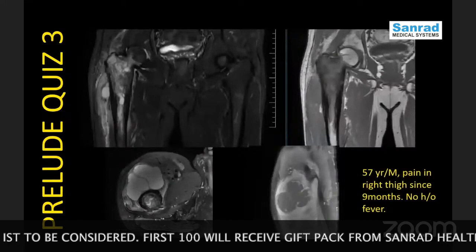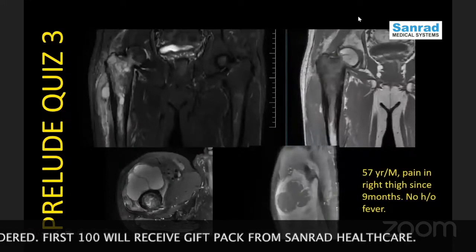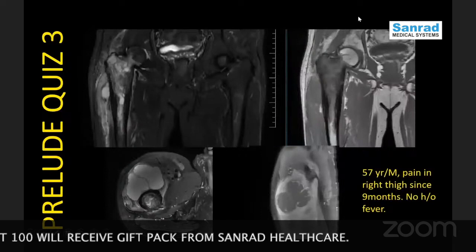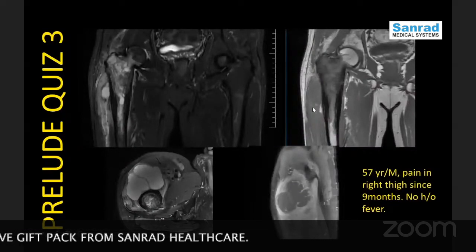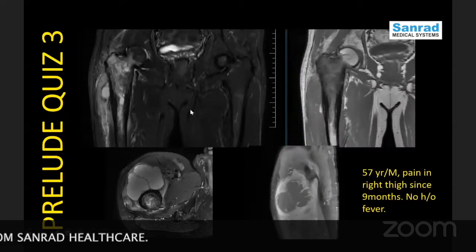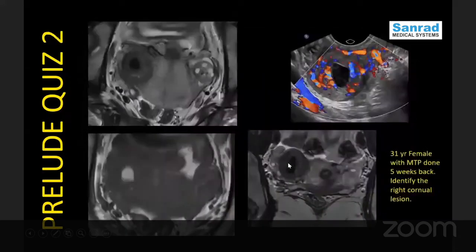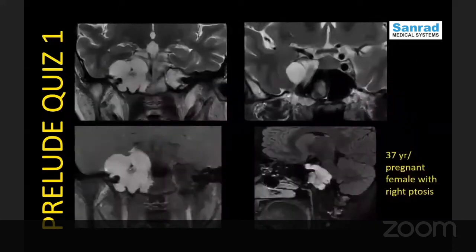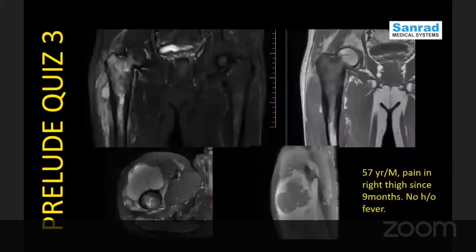Coming to the third question: these are MRI images of a 57-year-old male who had pain for the last nine months. There is no history of fever, and infective markers were all within normal limits. You can see coronal T1 non-fat sat, axial STAR, and post-contrast sagittal T1 images.